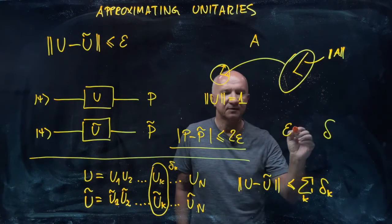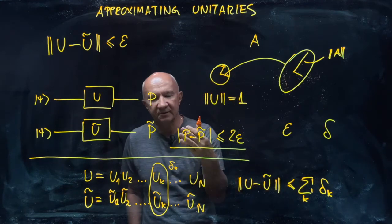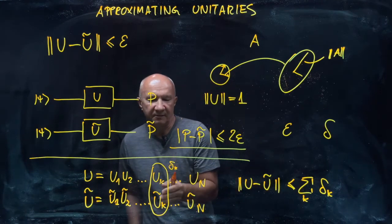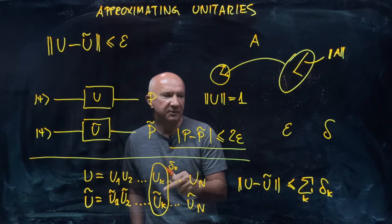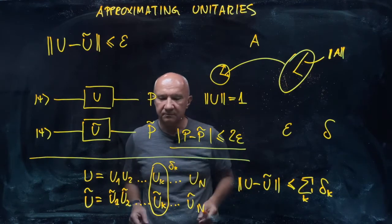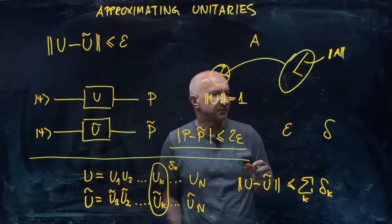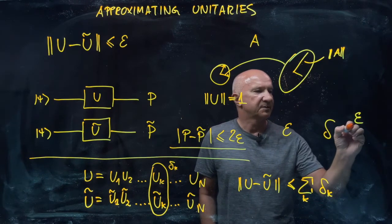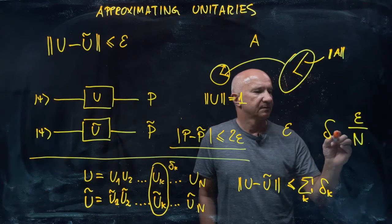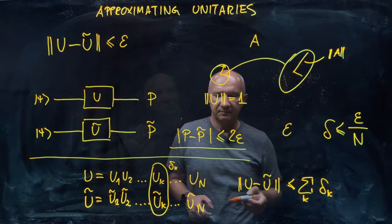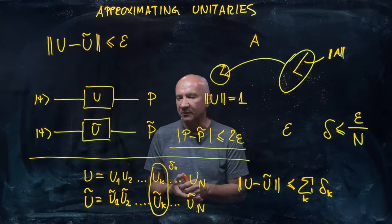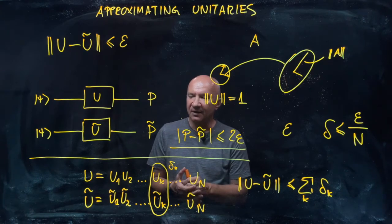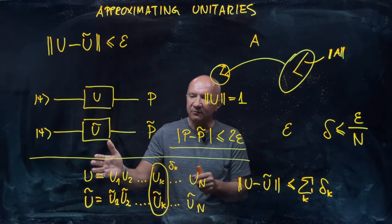So we require that each of them has to approximate the corresponding gate u sub k with precision that is epsilon over capital N.